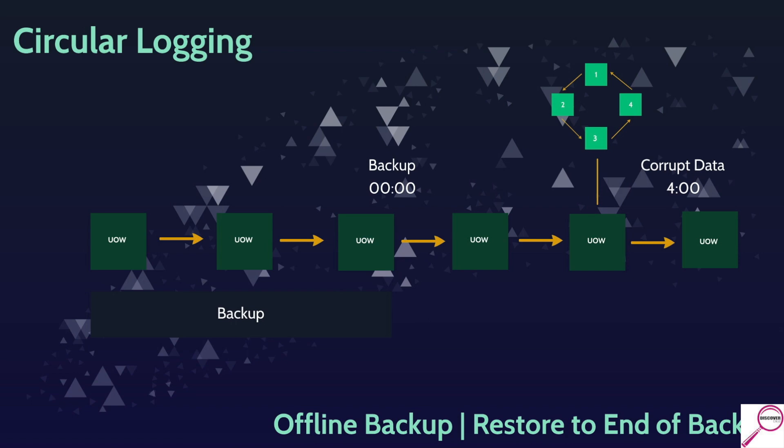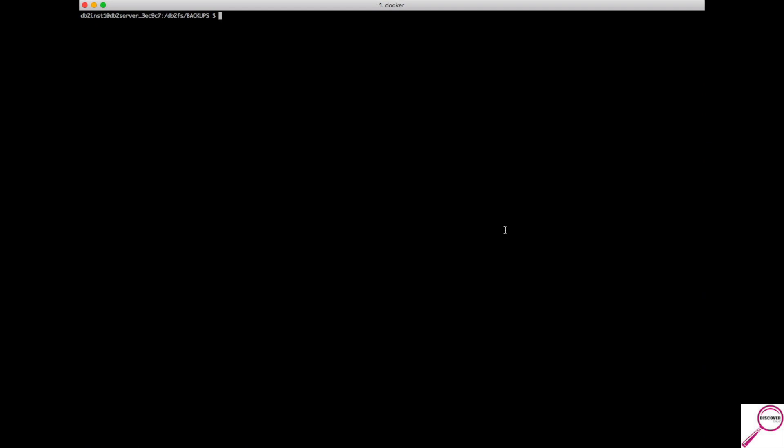Restoring an offline backup is the simpler of the two — offline versus online. However, it will behave differently depending on your system. If you have circular logging in place and can only do offline backups, the restore response is slightly different than if you have a system capable of doing online backups but chose an offline. If you configure your database to support online backups, it's not either/or — you have the capability of doing both.